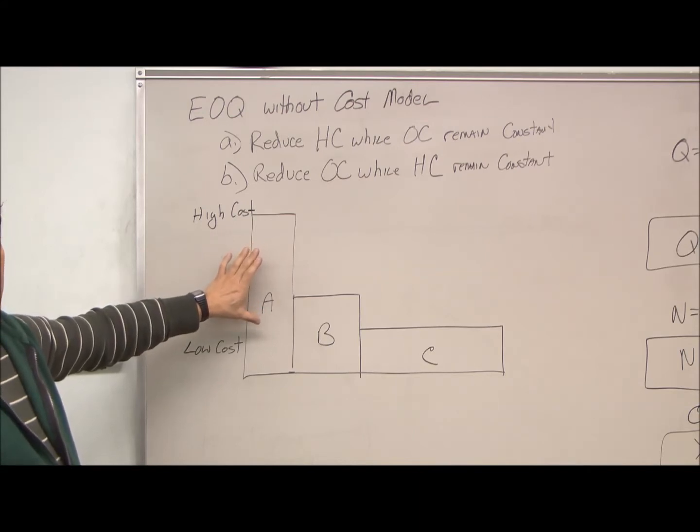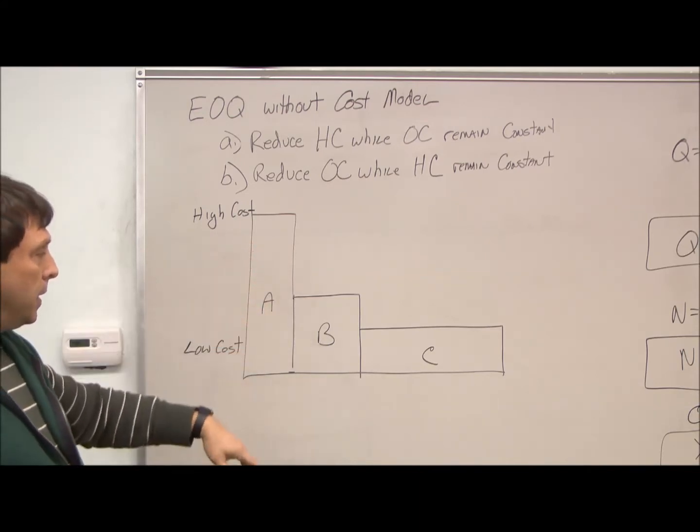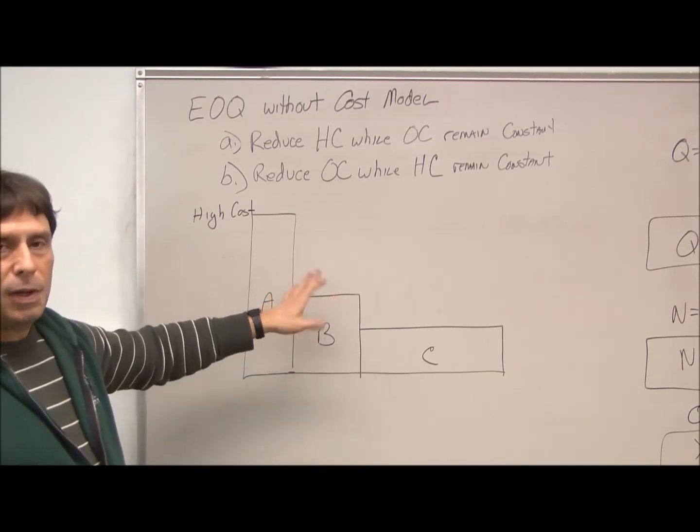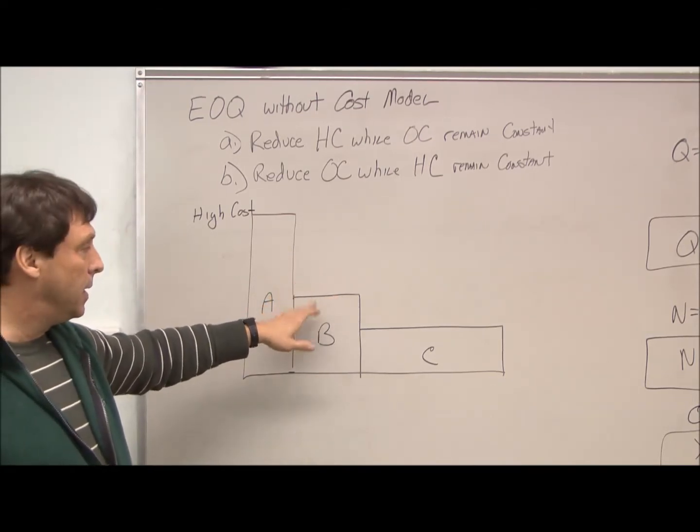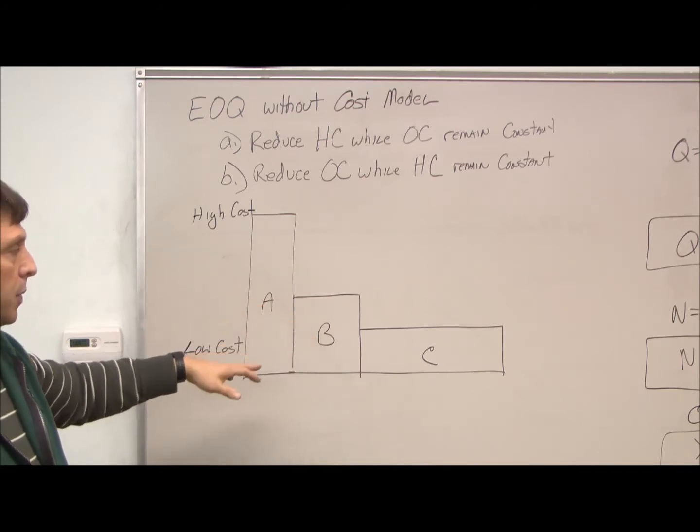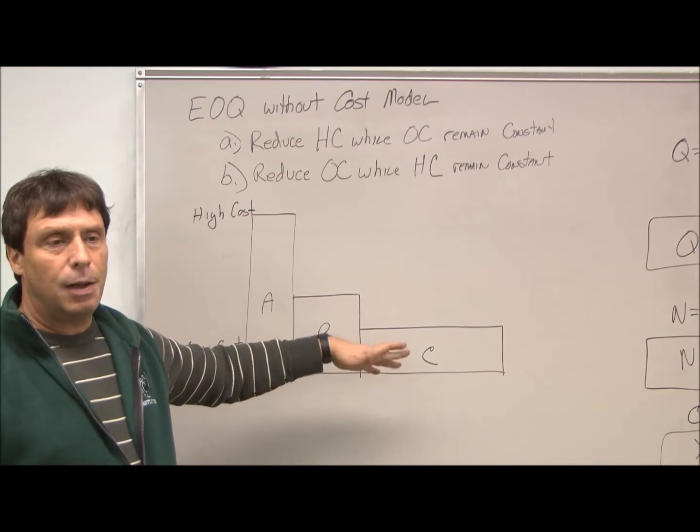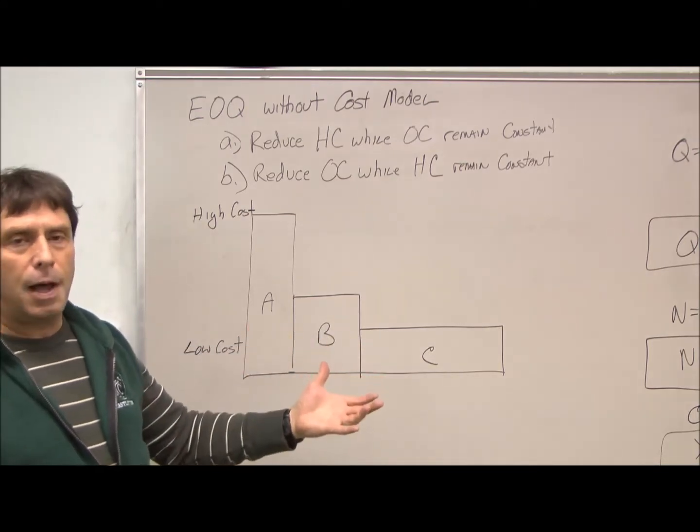This is very worth tracking all the costs individually. We have our B inventory, which is moderate cost, we use it moderately. Generally with modern computer systems, we track that. And then we have our C inventory, which is really low cost stuff, we use a lot of it.